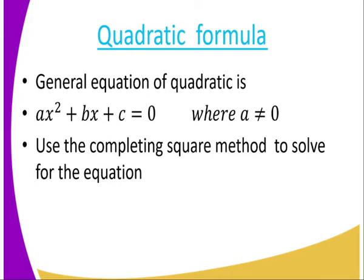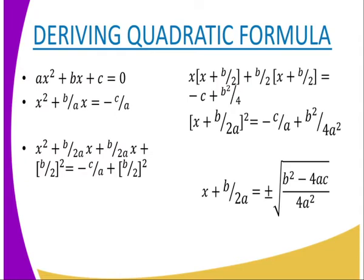For the quadratic formula, before we derive the formula, we need first of all to recall the quadratic equation. As you can see on the screen, we have the general quadratic equation, which is ax squared plus bx plus c, which is equal to zero, where a is not equal to zero. We use the completing square method to solve for the equation, and that is what we use to get the quadratic formula.